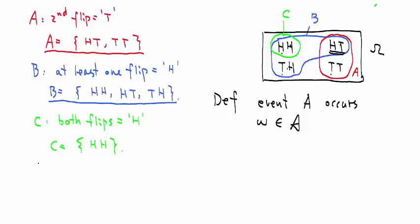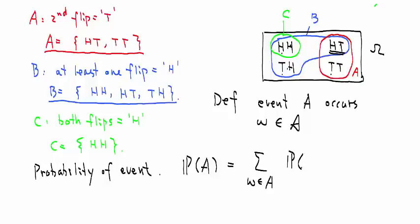Now we can also define the notion of the probability of an event. What is the probability you see an event occur - the probability you see event A occur? Well, it must be that the outcome is one of its elements. So we write this as the sum over all outcomes in this set, in this event, summing up the corresponding probability.